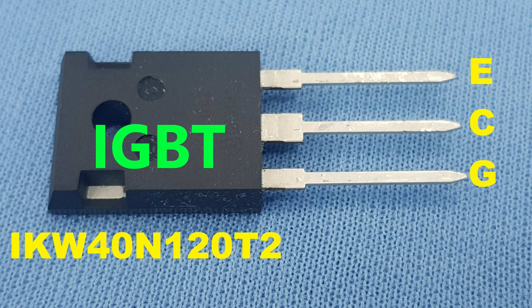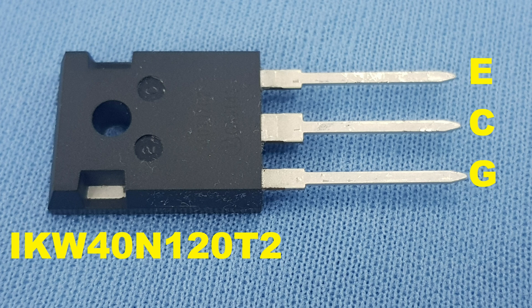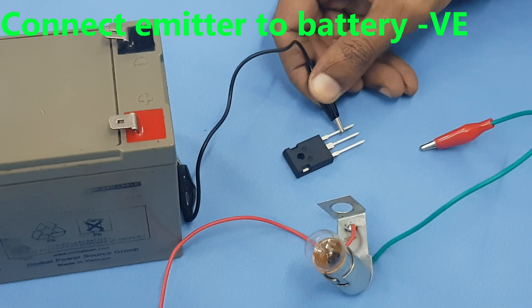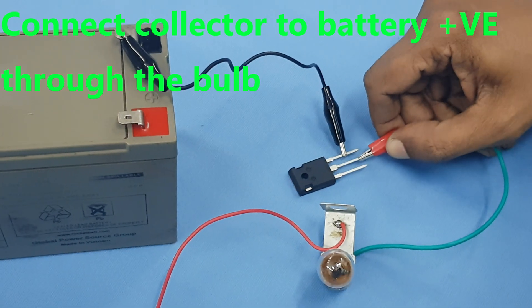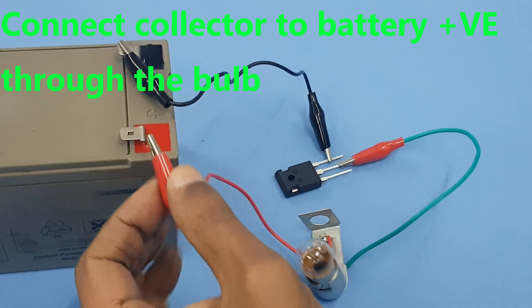Testing the IGBT IKW40N120T2. Connect emitter to battery negative. Connect collector to battery positive through the bulb.